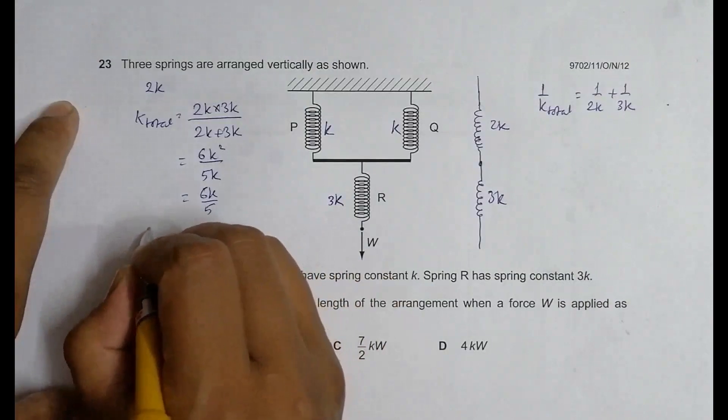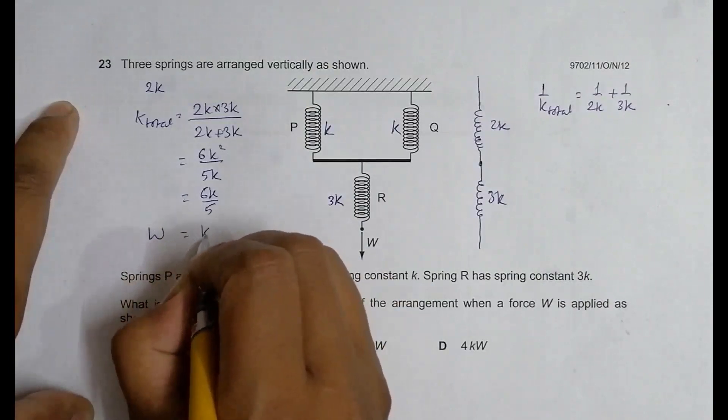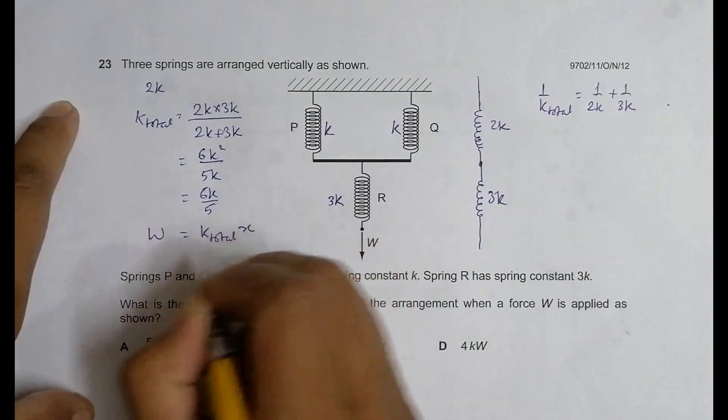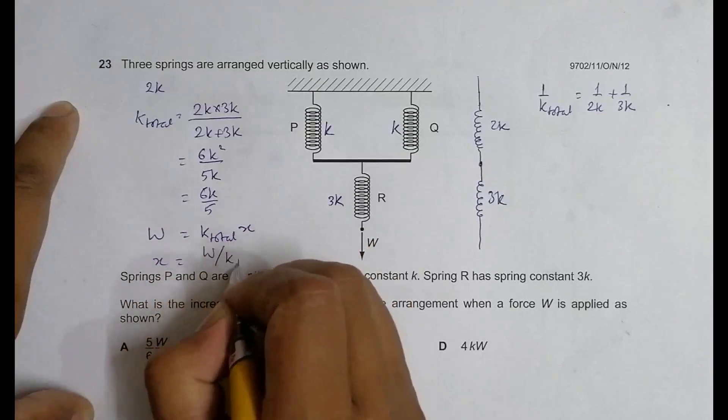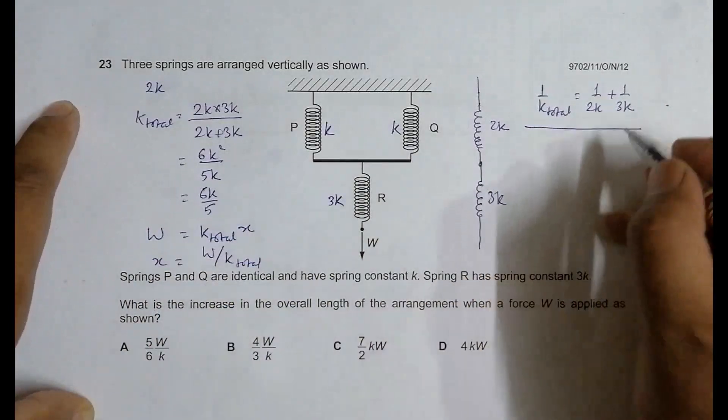So now the relationship between the force, extension, and K will be equal to K total into the extension X. So X should be equal to W divided by this K total. And if I use this value over here, if I write the value here, it will be equal to